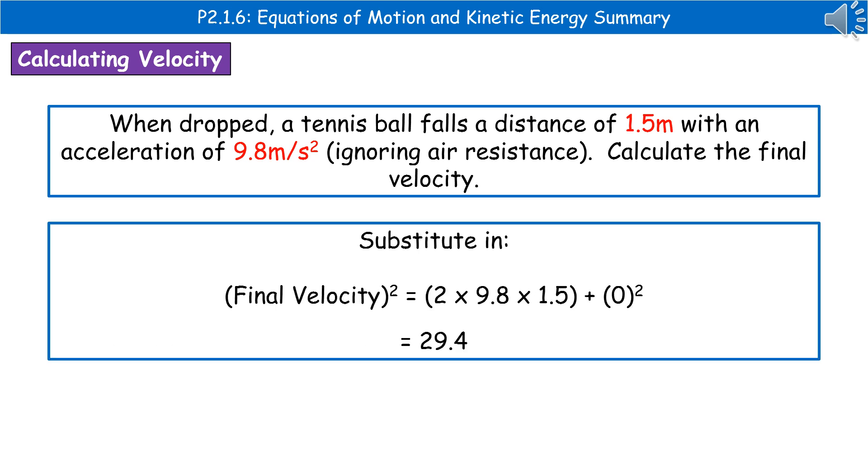From there we can substitute in the values we know, so final velocity squared is 2 times 9.8 times 1.5 plus zero squared, which gives us 29.4.